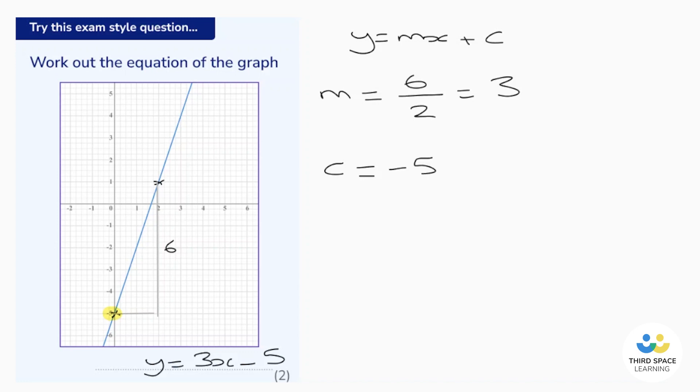Let's see where those marks come from. It's worth two marks, and we're going to get one mark for a correct gradient of 3 and a final mark for the whole answer.